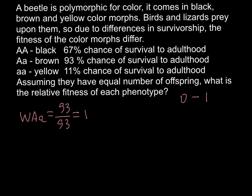So now we can proceed and find the relative fitness of the other genotypes, relative to the most fitted genotype, which is brown with a fitness of 1. For black — the homozygous dominant — we calculate W for AA: that is 67 divided by 93, which gives us 0.72. So 0.72 is the relative fitness of the homozygous dominant.